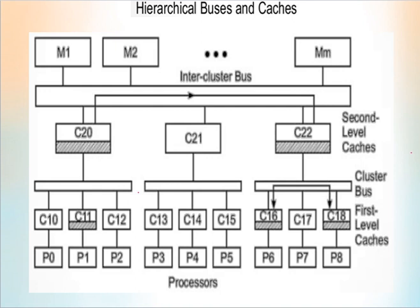Look at this figure — this is a representation of hierarchical buses and caches. This organization has processors and caches represented as P0 to P8 (the processors) and C10 to C18 (the cache memories), arranged as leaf nodes in the tree. It is a multi-level tree structure in which the leaf nodes are processors P0 to P8 and their private caches C10 to C18. These form the first-level caches of this organization.